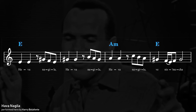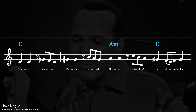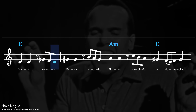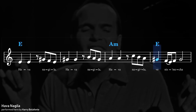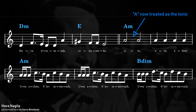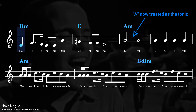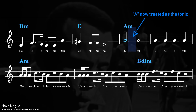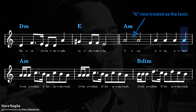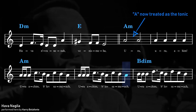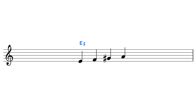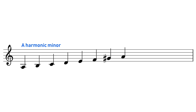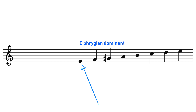The Jewish traditional melody Hava Nagila is another good example of Phrygian Dominant's modal quality. The first section of Hava Nagila uses E Phrygian Dominant. However, later in the song the note A begins to be treated as the tonic note. Because A harmonic minor and E Phrygian Dominant are modes of each other — the same scale but with a different note treated as the tonic — all we have to do to switch between them is change whether we're treating E or A as the tonic note.